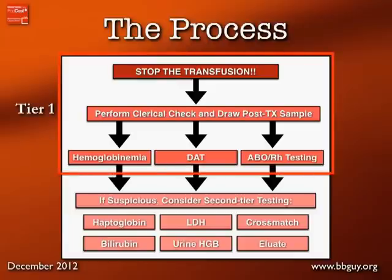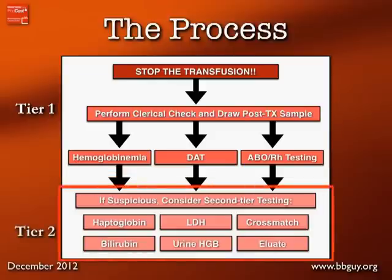I essentially break workup tests down into Tier 1 tests — which include stopping the transfusion, doing a clerical check, checking for hemoglobinemia, the DAT or direct Coombs test, and repeating ABO and Rh testing — and then only if you're suspicious, moving on to the Tier 2 tests that you see at the bottom.